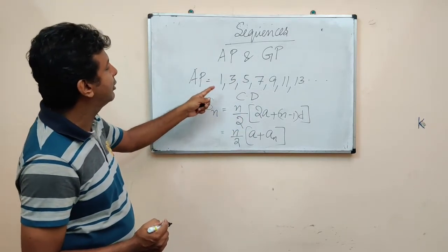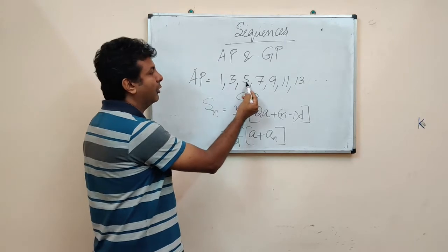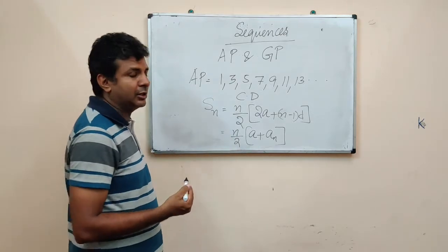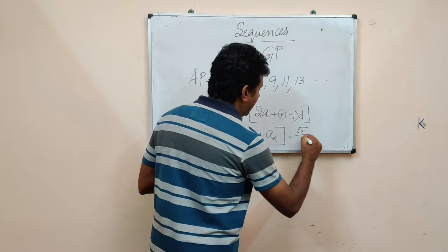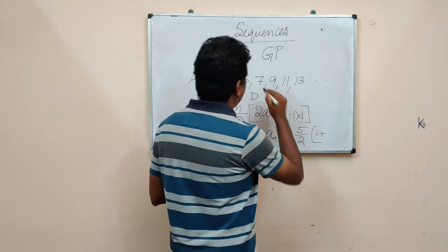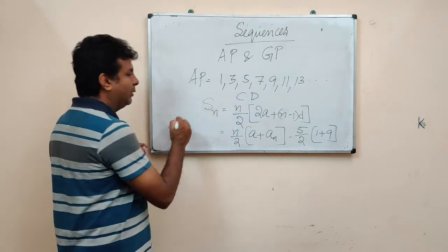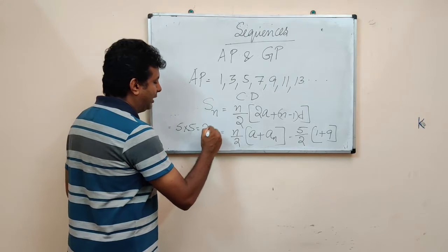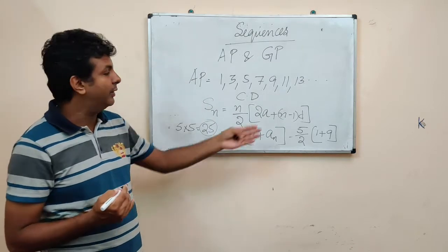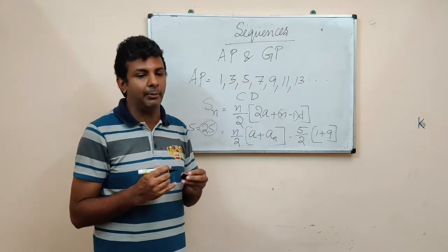What is the sum to 5 terms? For 1, 3, 5, 7, 9 — the sum to 5 terms is 1 plus 3 is 4, plus 5 is 9, plus 7 is 16, plus 9 is 25. We know it is 25. Let us substitute: for the fifth term, it will be 5/2 multiplied by (A is 1 plus AN, where the fifth term is 9). So you have 5/2 into 10, that is 5 into 5, which is 25.